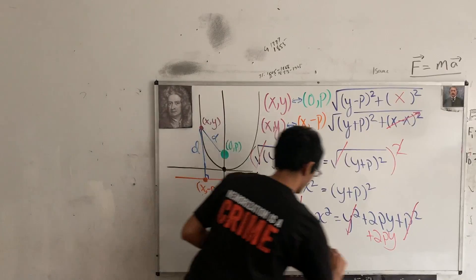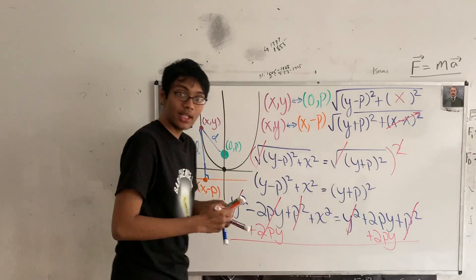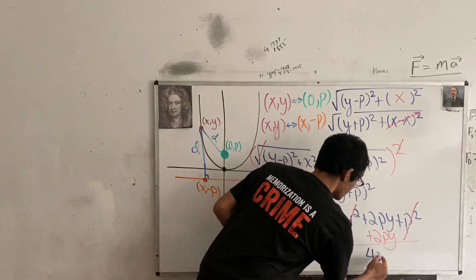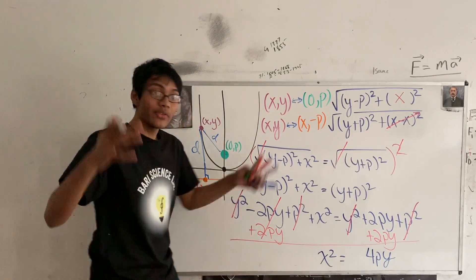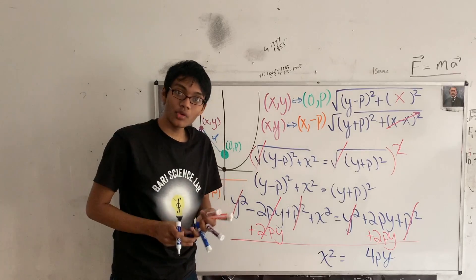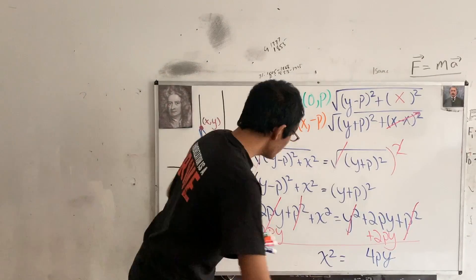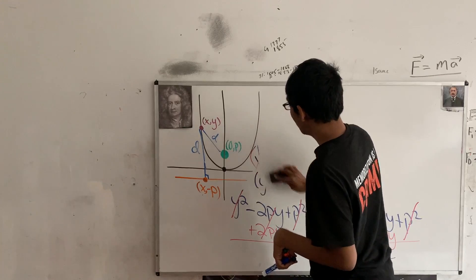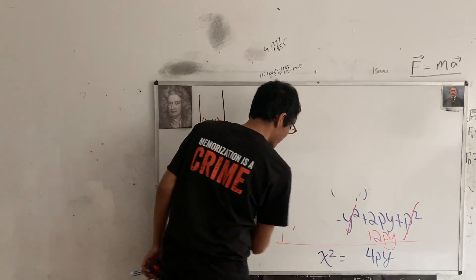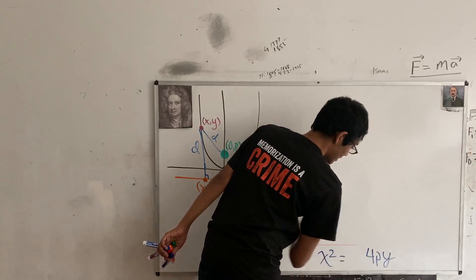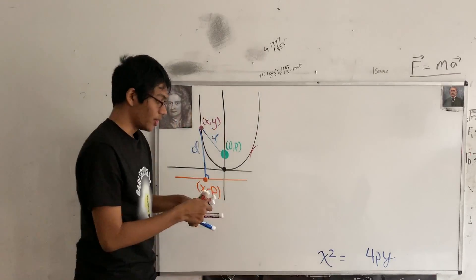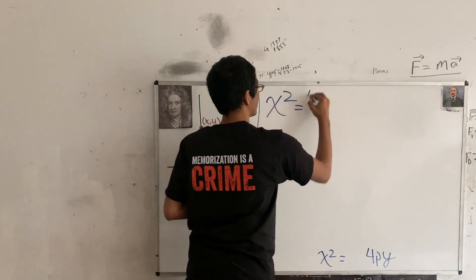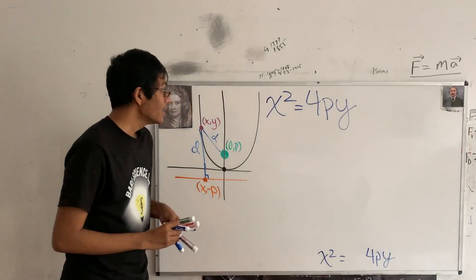Adding 2py to both sides, the minus 2py on the left cancels out, and we're left with x squared on the left and 4py on the right. And so we've just derived the formula for a parabola: x squared equals 4py. We're in the holy land — we've derived the equation of a parabola just from the focus and directrix.